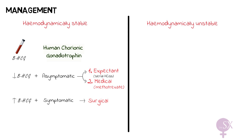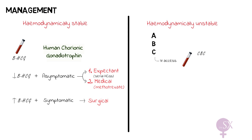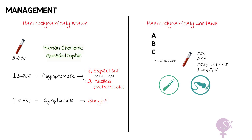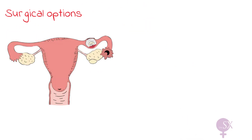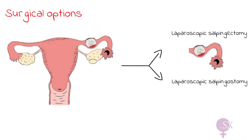For hemodynamically unstable patients, as in all emergencies you always need to address ABC — airway, breathing, and circulation. Once done, obtain IV access and take bloods, including pre-op bloods as the patient will require surgery. A pregnancy test is done to confirm pregnancy, and an ultrasound scan to confirm the diagnosis of ectopic pregnancy. Surgically, we most commonly perform a laparoscopic salpingectomy, where the ectopic is removed with the entire fallopian tube. In cases where there is a problem with the contralateral tube, we can opt for a laparoscopic salpingostomy, where only the ectopic is removed and the rest of the fallopian tube is sutured back together.